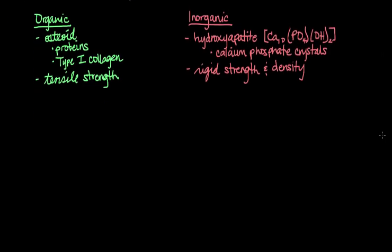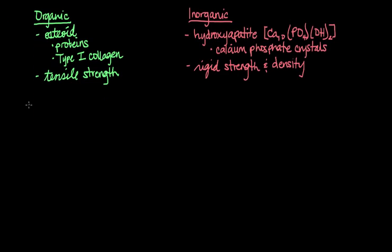So first up we have the osteoprogenitor cells. These cells are basically just the precursor to osteoblasts, so they're just an immature version of osteoblasts, and they differentiate into osteoblasts under the influence of various growth factors.